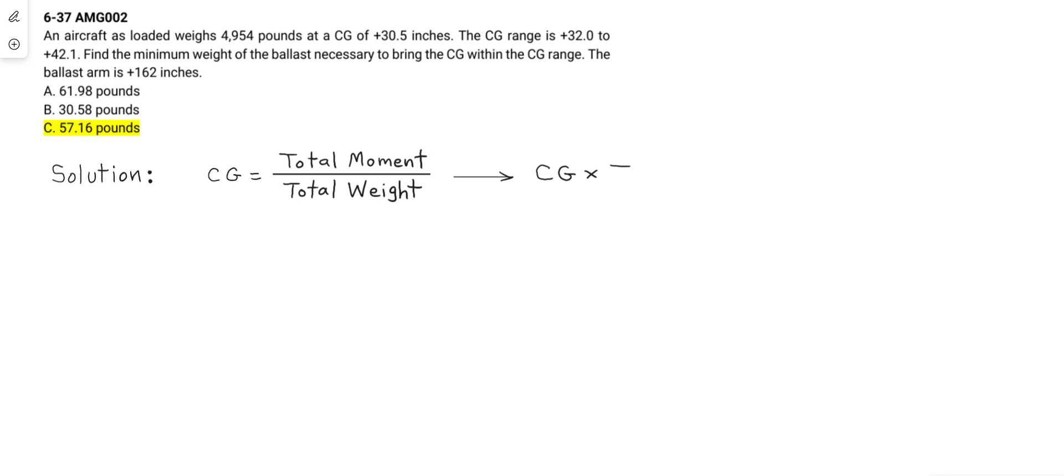The first part of the problem provides information to compute the total moment, or the original total moment, before we shift the CG into the correct CG range.